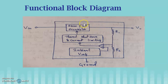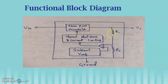It consists of a series pass transistor, a thermal shutdown and current limiting circuit, and also an internal reference block which provides the reference voltage. The IC regulator functions to maintain a constant output voltage with the help of an op-amp and the series pass transistor. One of the inputs to this op-amp is the reference voltage, and another input is a sample of the output voltage.